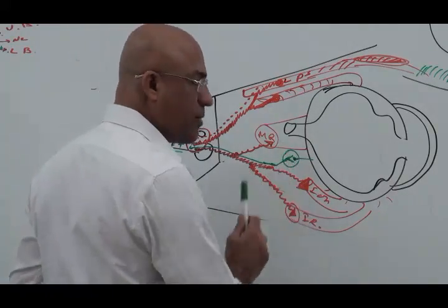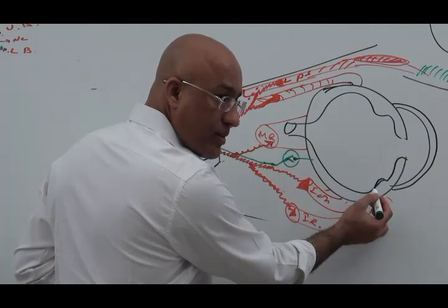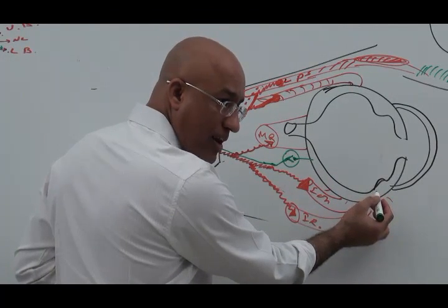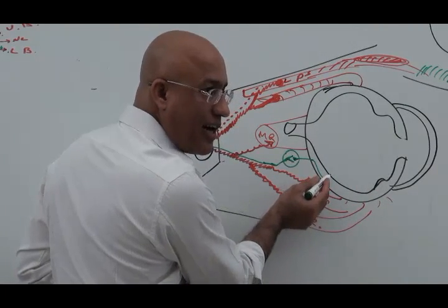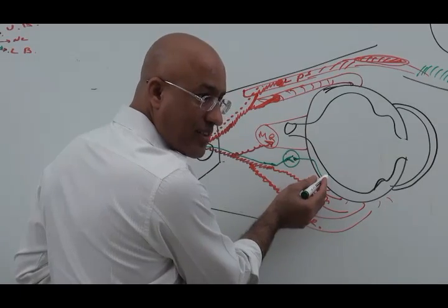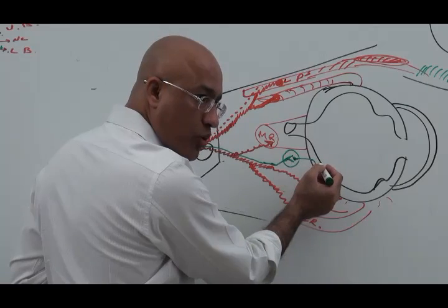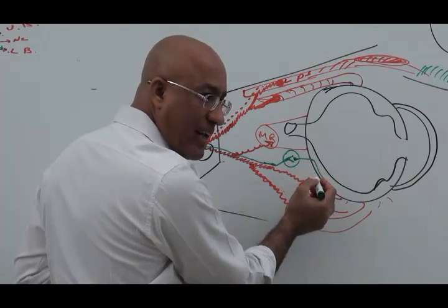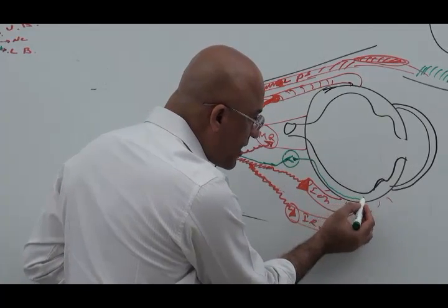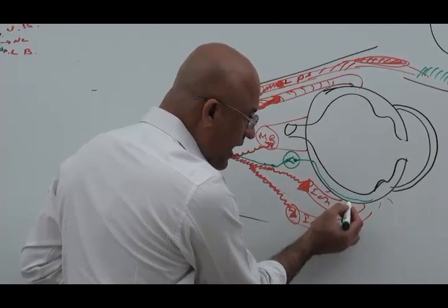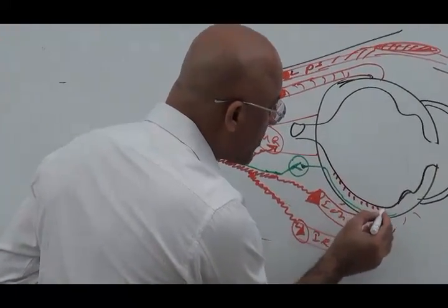But these parasympathetic fibers postganglionic enter into the eyeball and they move forward between the sclera and the choroid. There are three layers - there is sensory layer of retina, then more outer to that there is the choroidal layer, and then more outer to that is the sclera. So these fibers move forward between sclera outside and choroid inside.